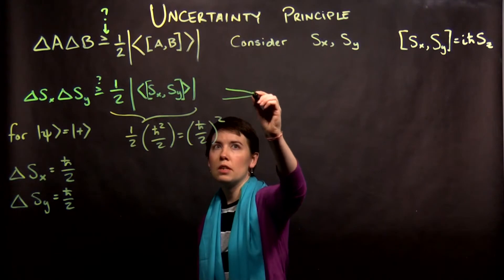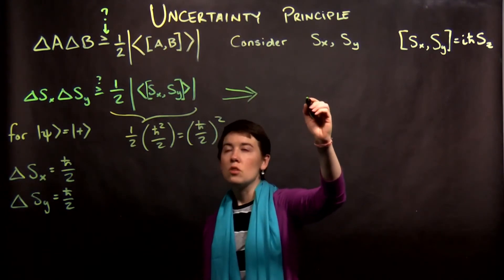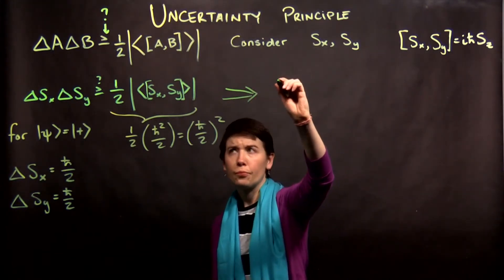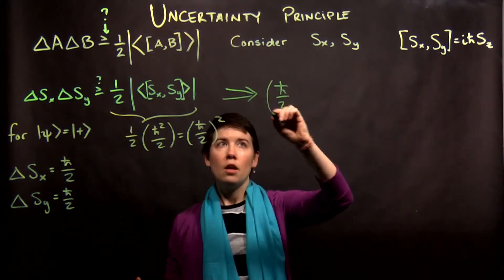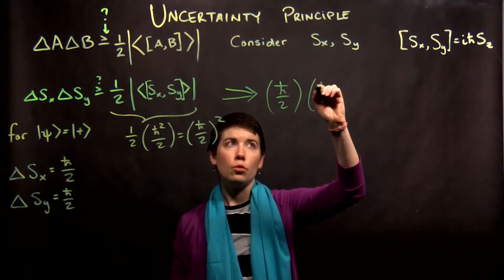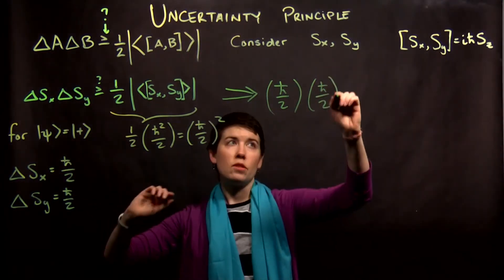So now we can look at our uncertainty principle, and we can plug in the left and right side. So on the left side, we have h bar over 2 coming from that first RMS deviation, and then we have h bar over 2 coming from the second RMS deviation.